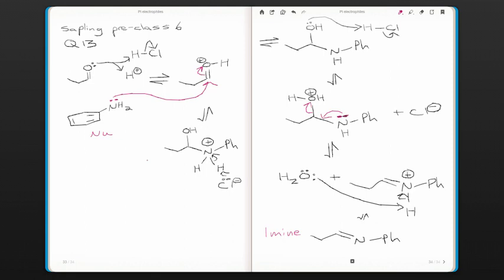Now the next thing that we can do with an imine is reduce it. So we can use a species known as sodium cyanoborohydride to reduce an imine.